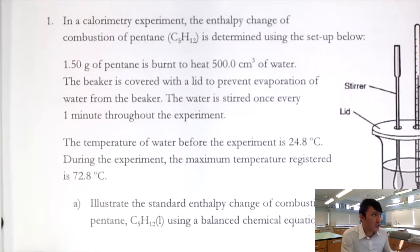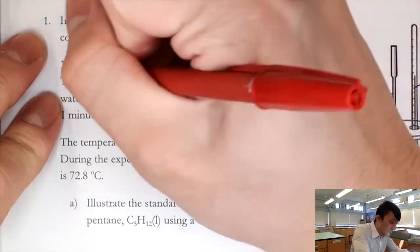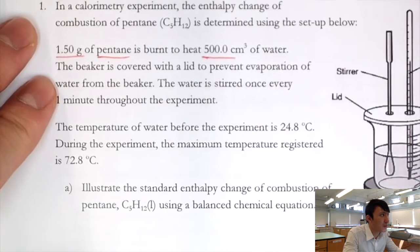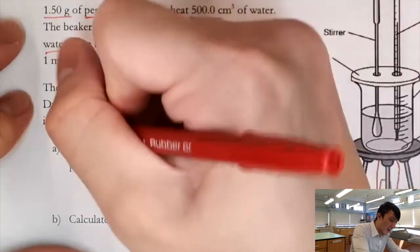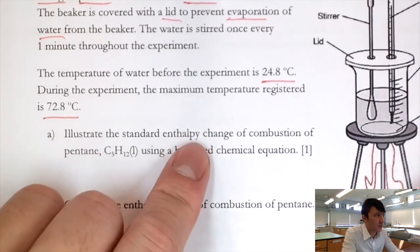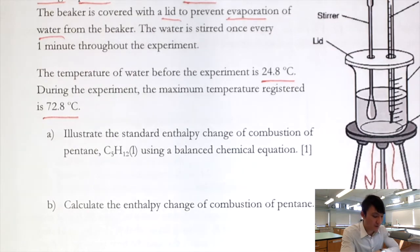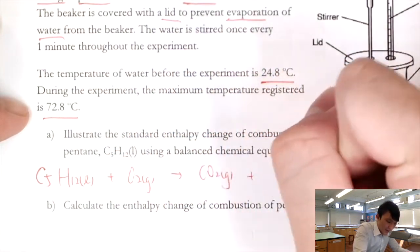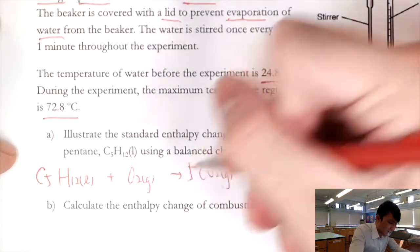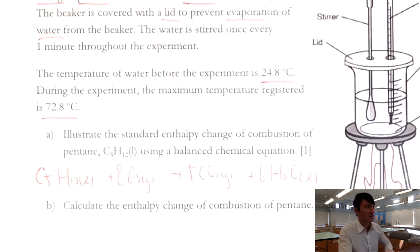Now for the practice question on combustion. 1 gram of pentane is burnt to heat 500 cm³ of water; a lid prevents evaporation and the solution is stirred every minute. The temperature goes from 24.8°C to 72.8°C. The standard enthalpy change of combustion of pentane is illustrated by the thermochemical equation: C₅H₁₂ + 8O₂ → 5CO₂ + 6H₂O(l), ΔH°꜀.